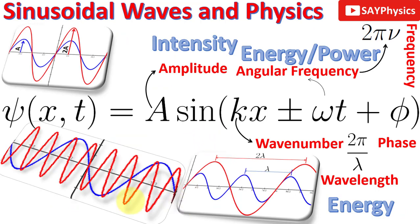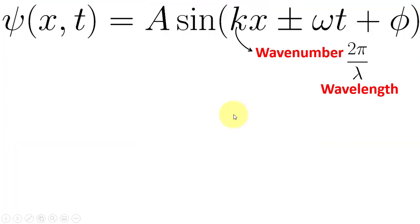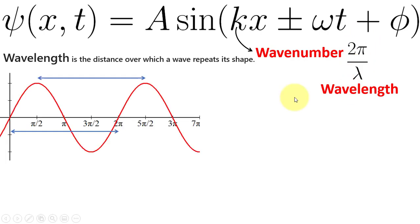Now we will explain the next term in this equation, which is the wave number. The wave number is defined as 2π/λ or 1/λ, where 2π is considered as a unit angular distance of 2π radians. For angular calculation we write it as 2π/λ, where λ is the wavelength.